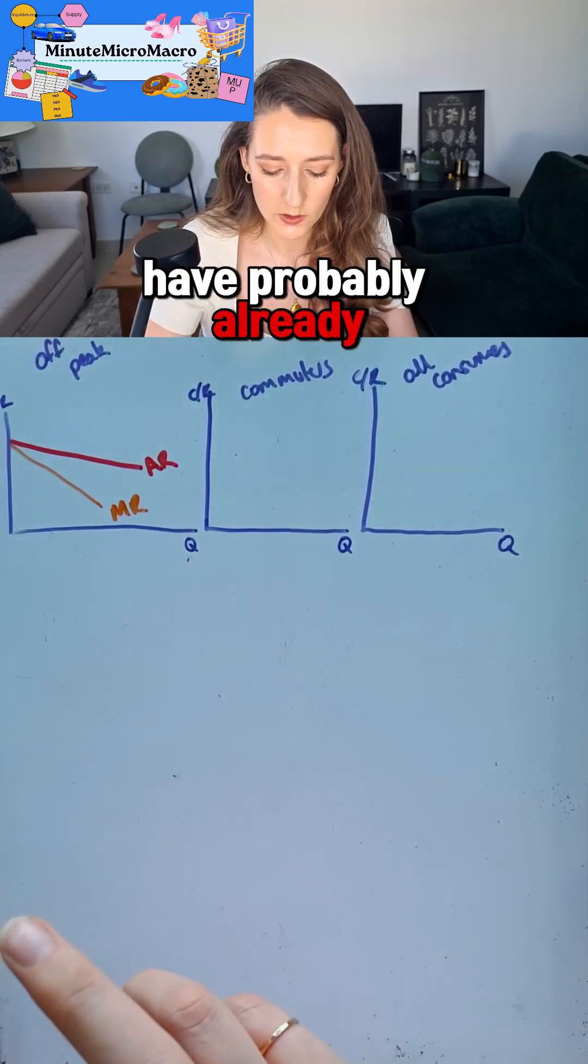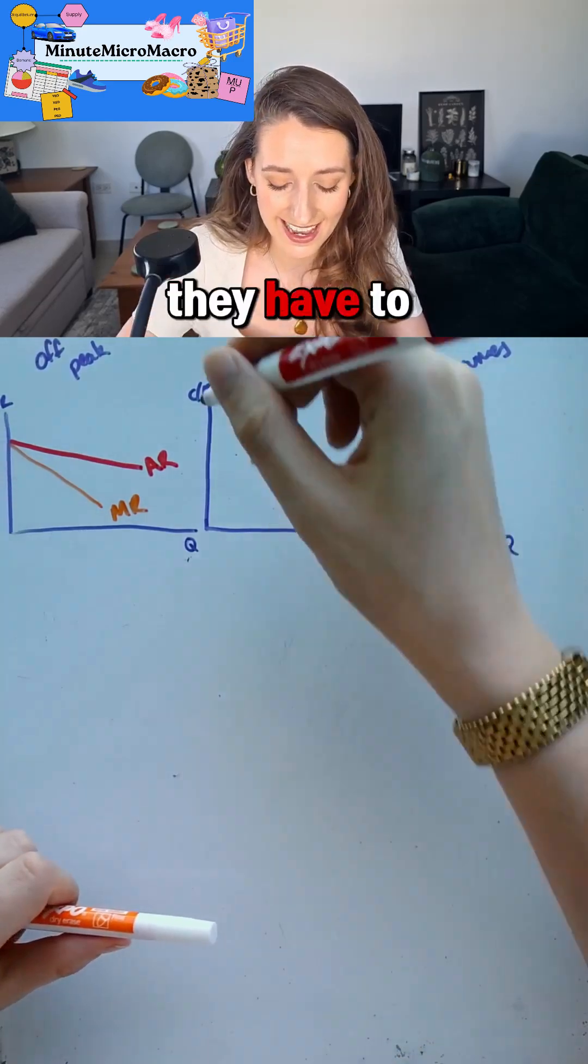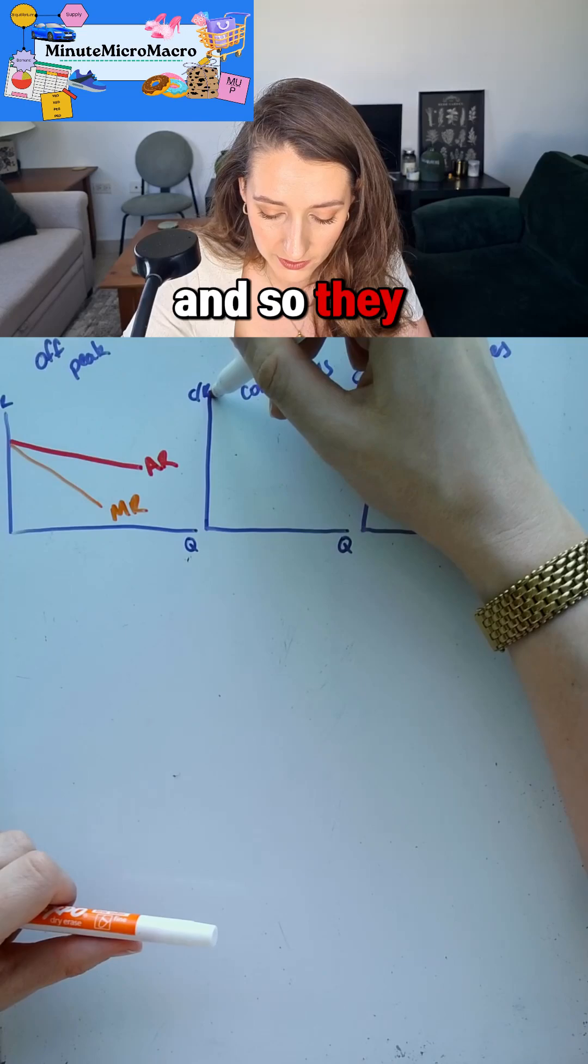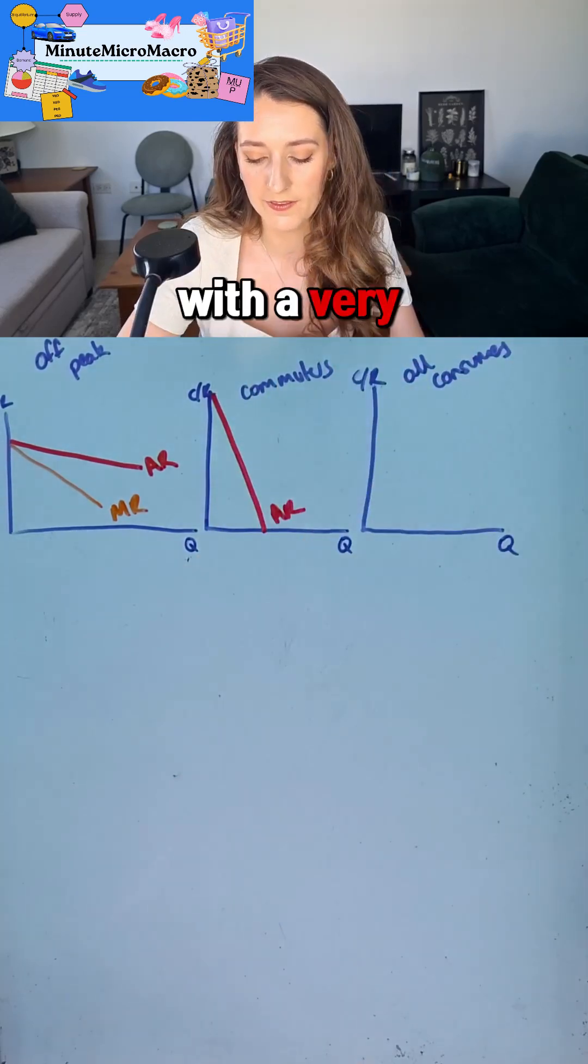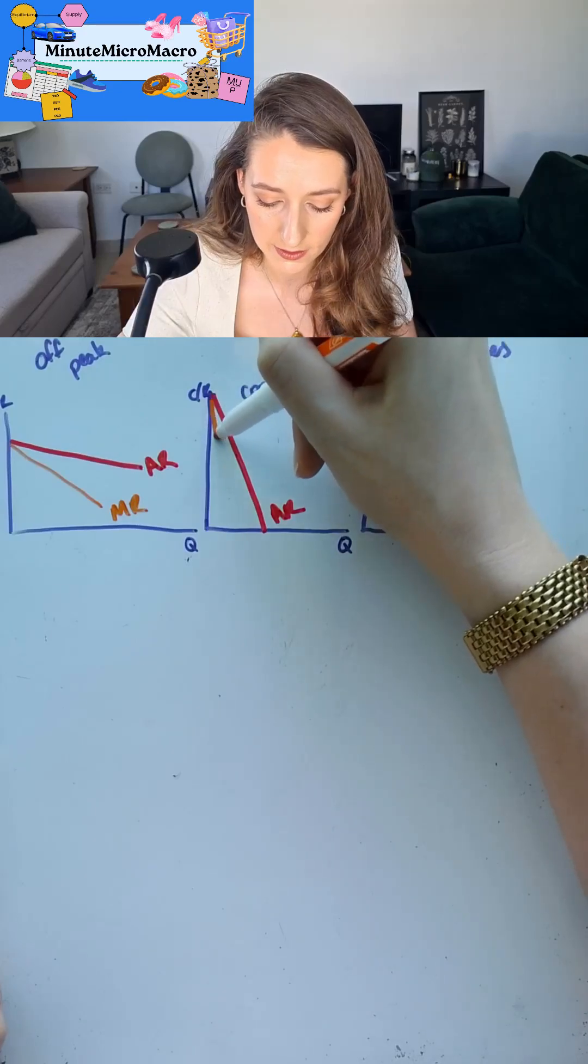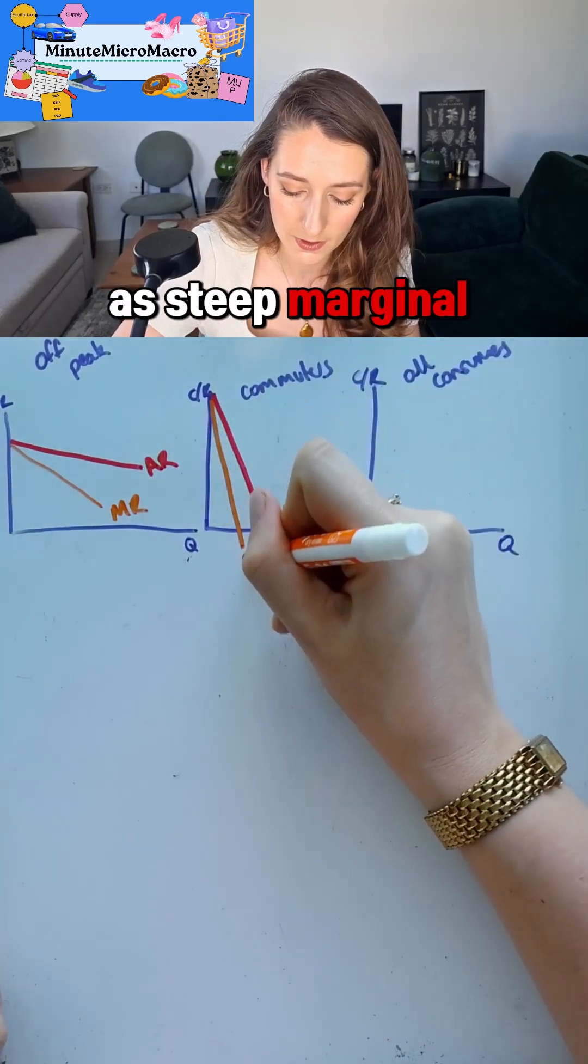Our commuters have probably already optimized their journey into the city. They have to be at work by a certain time and so they will have a much more inelastic demand, and so I can represent that with a very inelastic average revenue and a twice as steep marginal revenue.